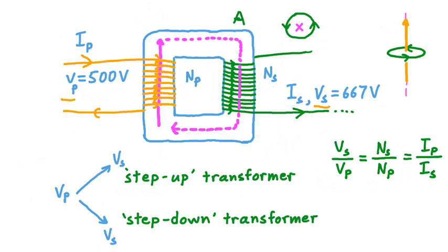Before we get some practice with an example, let's talk about the core of the transformer. From an efficiency perspective, the core is very important. The material we choose to make the core out of will affect just how well energy is transferred from the primary to the secondary coil. Of all the materials we could choose, we'd like one which is magnetizable — one which becomes a magnet when exposed to a magnetic field — and one that can respond quickly to rapidly changing magnetic fields. A leading material for doing this is iron, and it's very common to make transformer cores out of this metal. It helps to channel as well as amplify the magnetic field within the core.